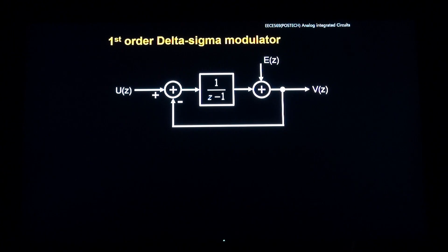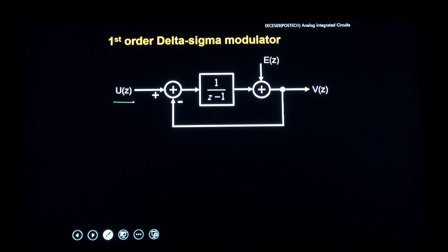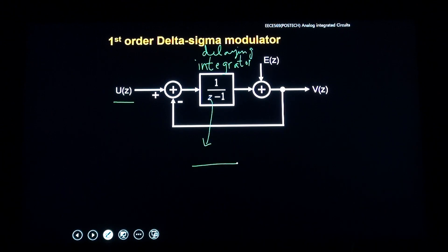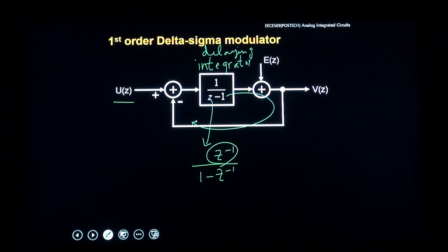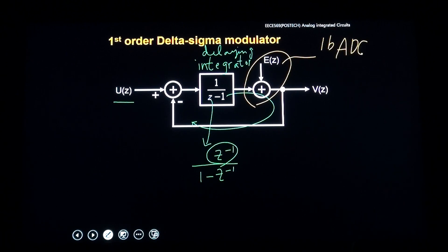This is a first-order Delta Sigma modulator revisited. We have analog input u and then a delaying integrator. If you rewrite this equation, we have a delaying operator in our numerator. We need at least one delaying element around the loop for stability. The next element is a quantizer, which is a one-bit ADC. We can increase this resolution to multi-bit — three bit or five bit — but in this example we use a one-bit quantizer.